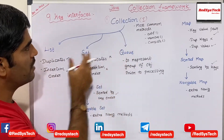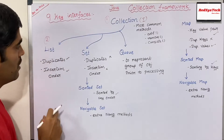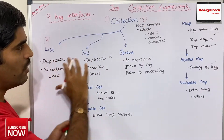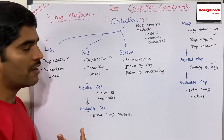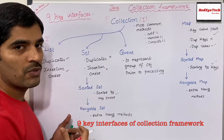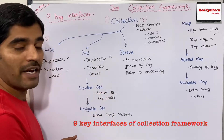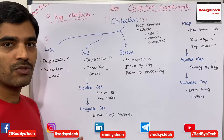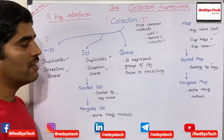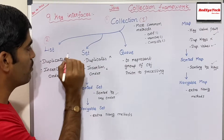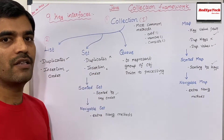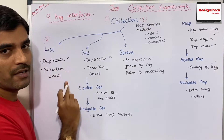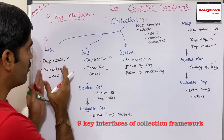The next interface is List, which is a child interface of the Collection interface. Each interface has its own properties and features, and we have to know what features each interface has so we can choose the right one. The features of List are: it allows duplicates, meaning if you add the same object again, it is permitted. Also, List maintains insertion order — whatever order you add objects into the collection, that order will be preserved.